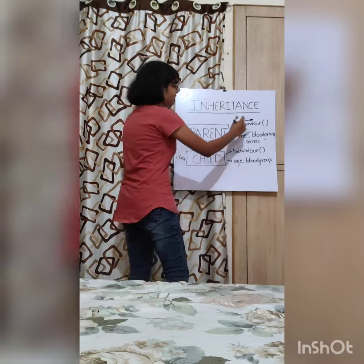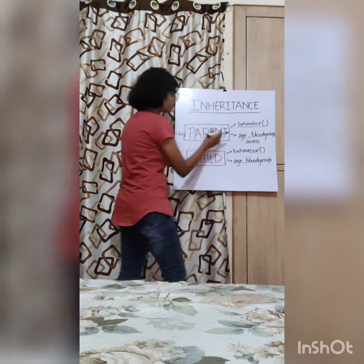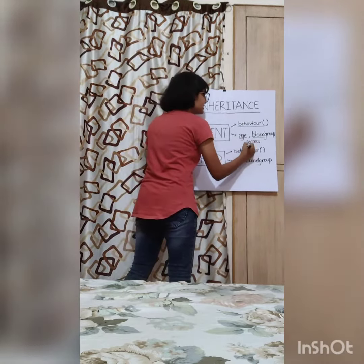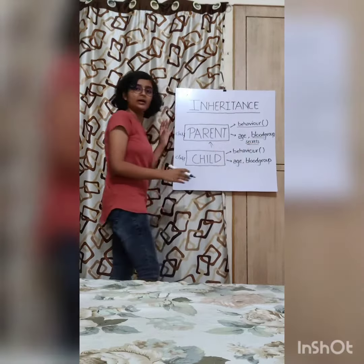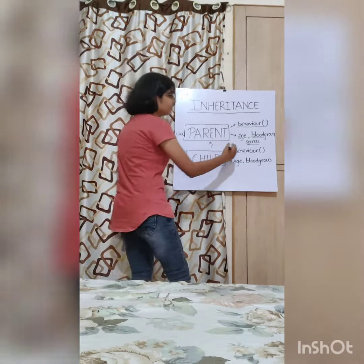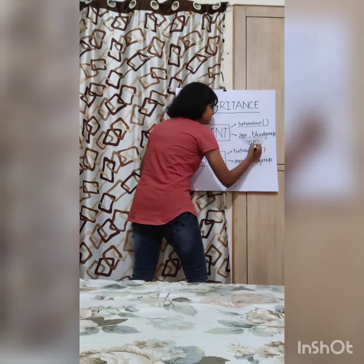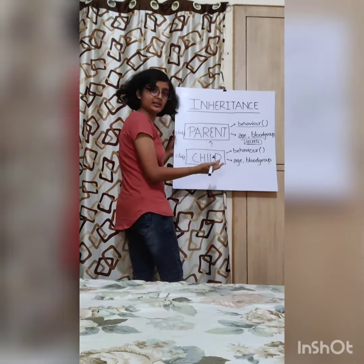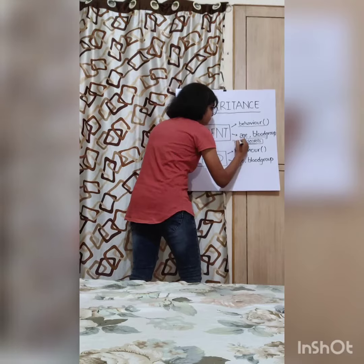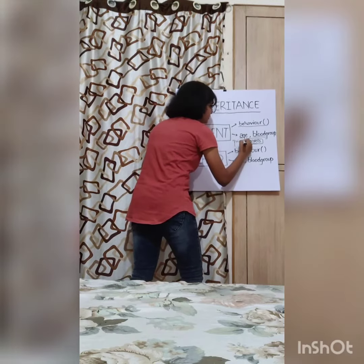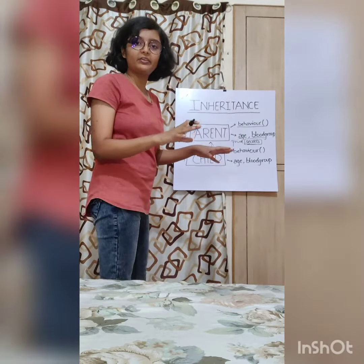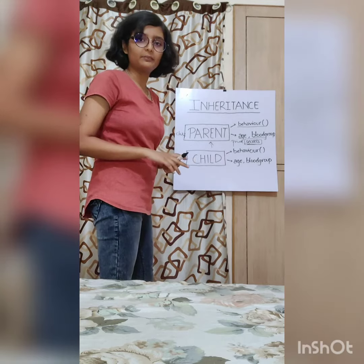These set of behaviors will be called the member functions of the parent class, and age, blood group, and secrets will be called the data members of the parent class. If a parent wants to hide these secrets from everyone, including his children, then he may keep them as private. Some features that can be known by everyone or by his children can be treated as public.